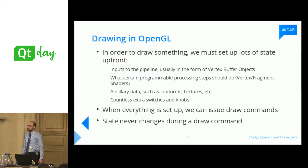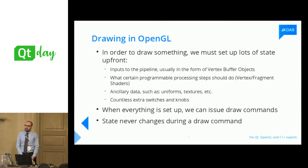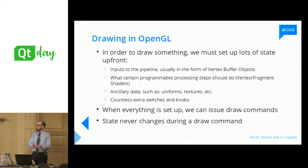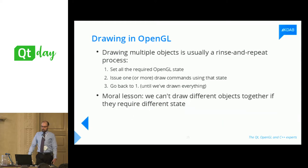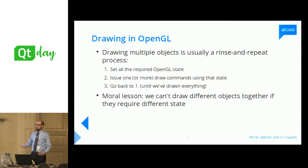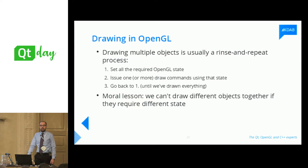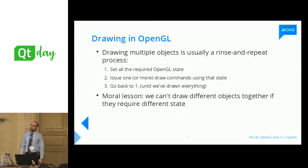The key point is that while drawing, you cannot change the state that has been set up — state never changes during a draw command, only between them. So the sequence is: set up everything, draw, then if you want to draw something else, change state and draw again. If you want to draw multiple objects like a rectangle and an image, you must set up OpenGL for one object, draw it, change state, then draw the next. You cannot draw different objects together if they require different state, because you cannot change state during a draw call.